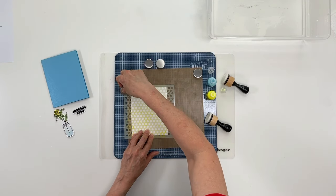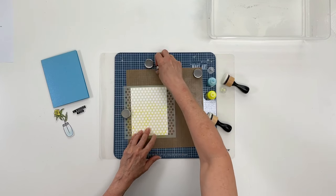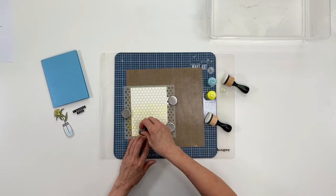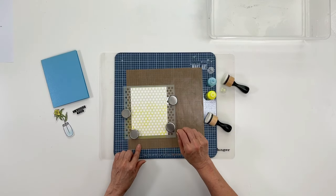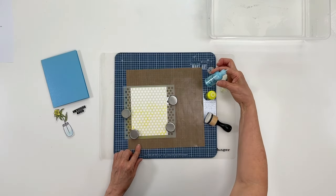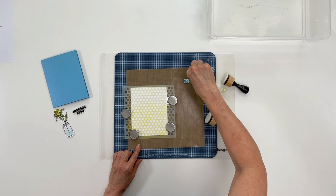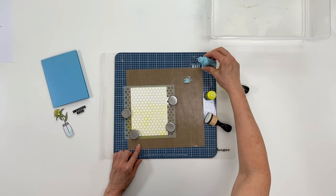I'm going to place my magnets to hold things in place. I'm going to start at the top using Robin's egg first, and I'm going to put a generous amount here onto the craft sheet because it does take quite a bit.